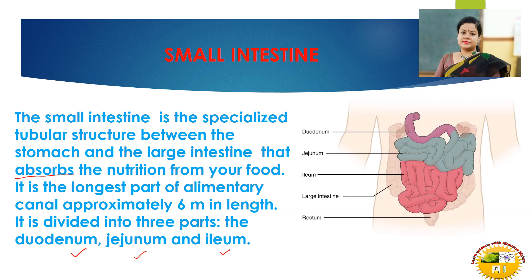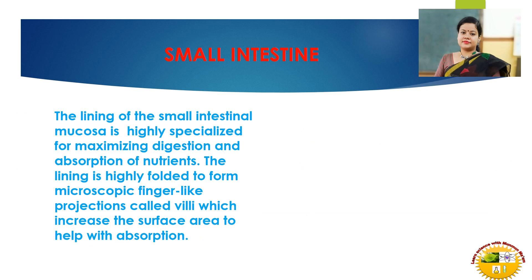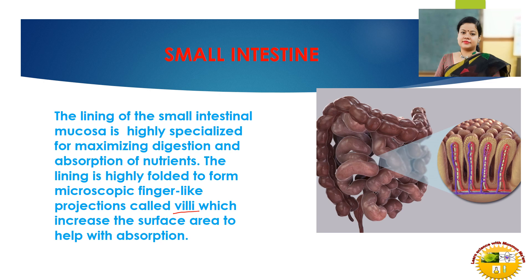Let's see the structure of the small intestine. It is highly coiled because it is 6 meters long and fitted into a small space. The 3 parts are: first, duodenum; then jejunum; then ileum. The lining of the small intestinal mucosa is highly specialized for maximizing digestion and absorption of nutrients. The lining is highly folded to form microscopic finger-like projections called villi, which increase the surface area and help in absorption of food. You can see the small intestine is highly coiled and these finger-like projections are the villi.